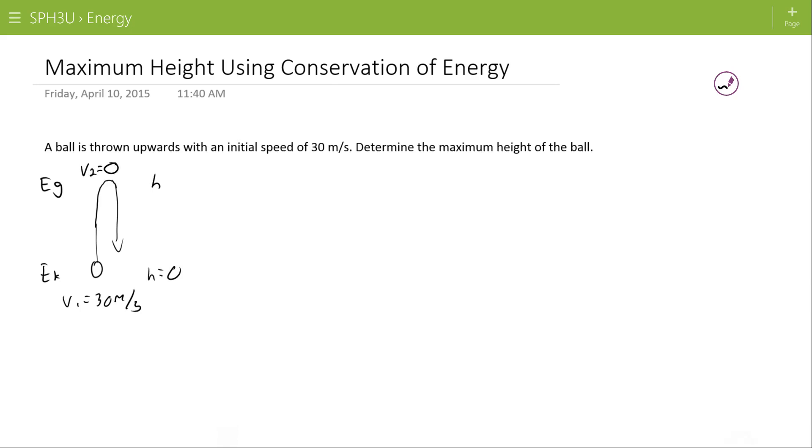The law of conservation of energy says we're ignoring things like wind resistance or other things that might take energy out of the system, and we're assuming that the energy in the initial situation is equal to the energy in the final situation. E1 in this case we said is kinetic, and E2 in this case is gravitational.